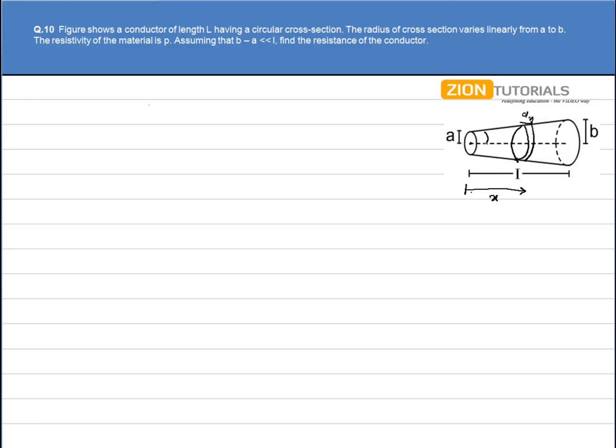Now, if this angle is theta, then tan theta is clearly (b-a) divided by L, or it will be equal to (y-a) by x, where y is the radius of this elementary strip.